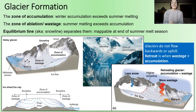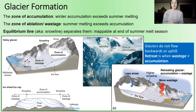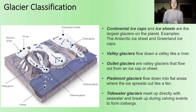Something important to keep in mind: glaciers do not flow uphill. They only appear to flow uphill sometimes when they're in retreat. They advance downhill and retreat whichever way they came from as they melt. Before we get to the geology, let's talk about classification of different glacier types.